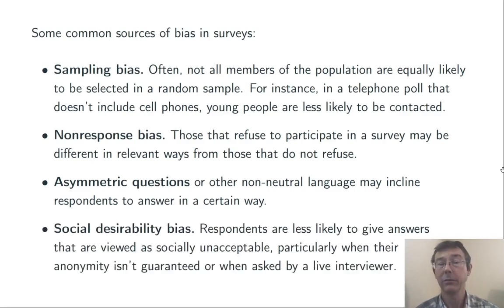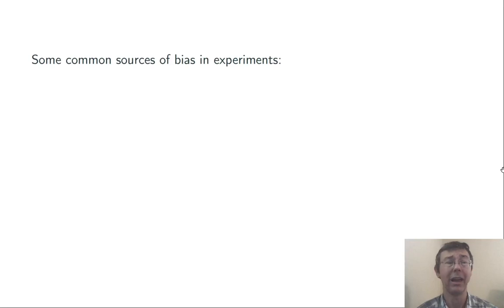Social desirability bias. Respondents are less likely to give answers that are viewed as socially unacceptable, particularly when their anonymity isn't guaranteed or when they're asked by a live interviewer. For instance, if we were to ask people how many times they brushed their teeth in the previous 24 hours, we'd likely get a biased result. The results are likely to be higher than the actual number, than the actual average.